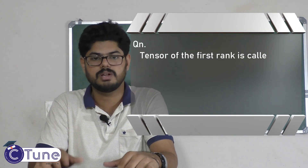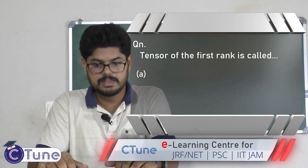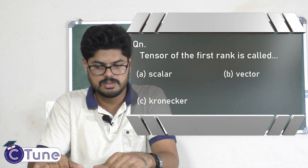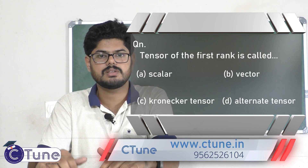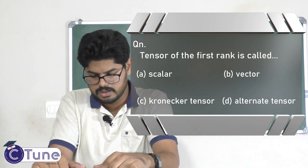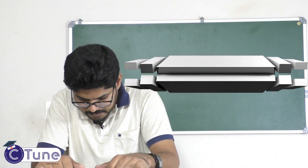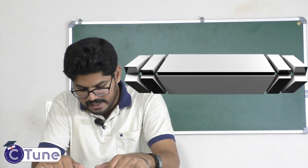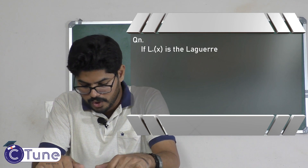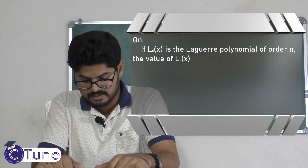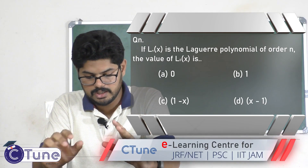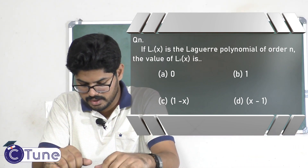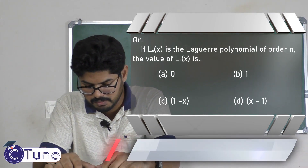A tensor of first rank is called a vector. Scalars are tensors of rank zero, and a first rank tensor is a vector. If Lₙ(x) is the Laguerre polynomial of order n, the value of L₀(x) is simply 1. So option B is the correct answer.